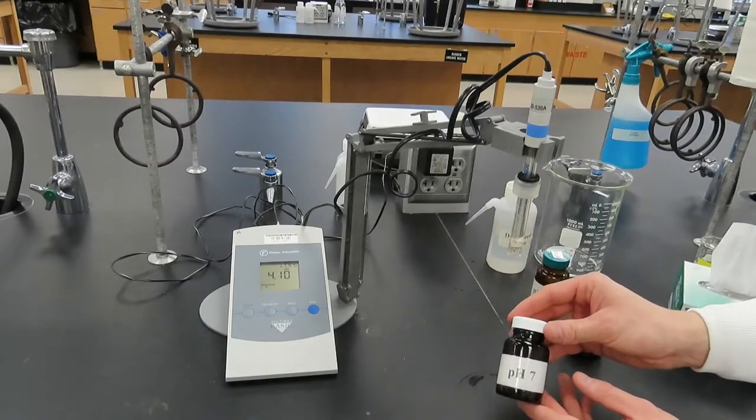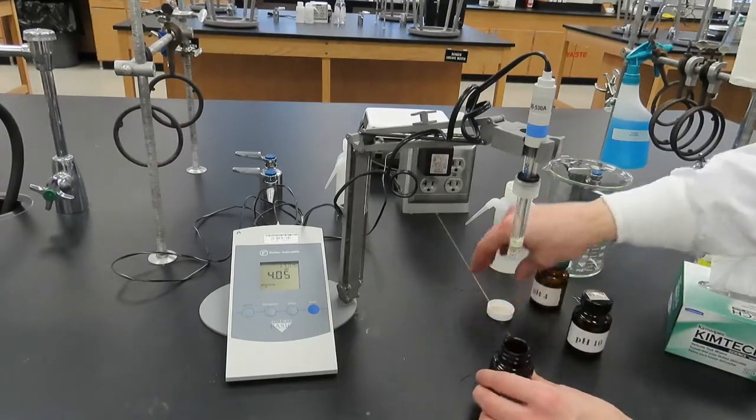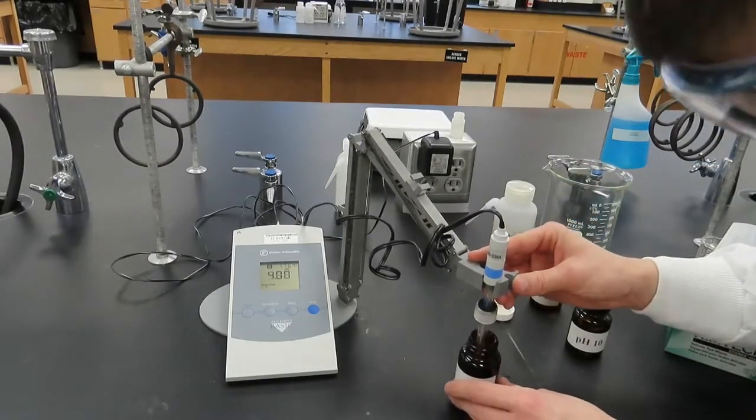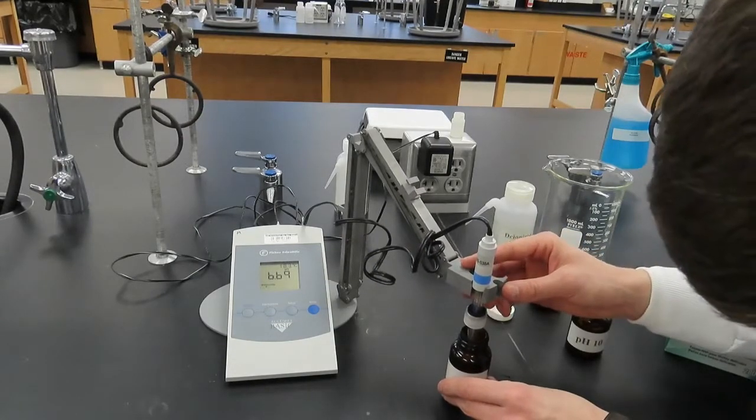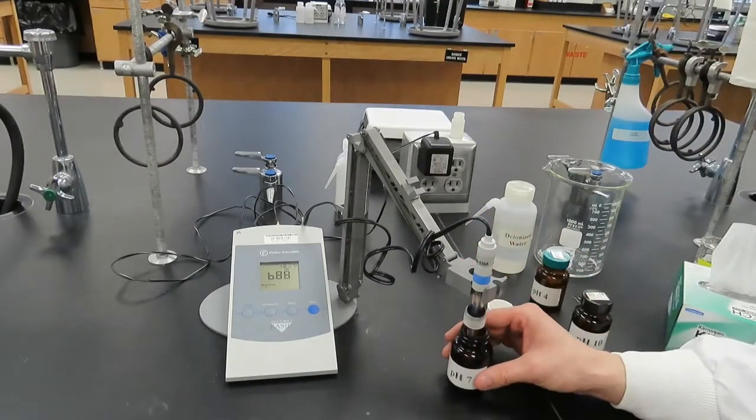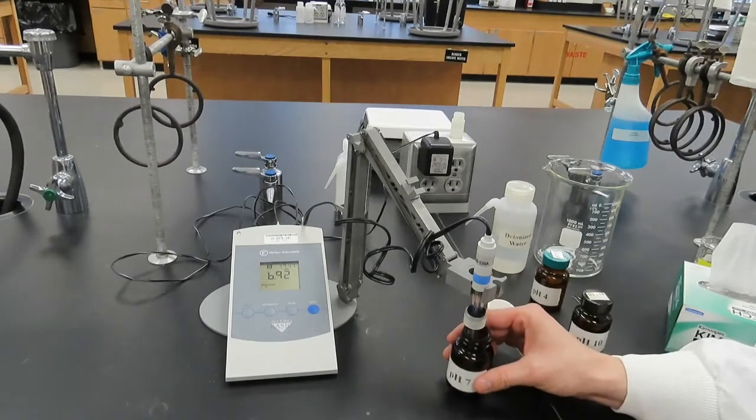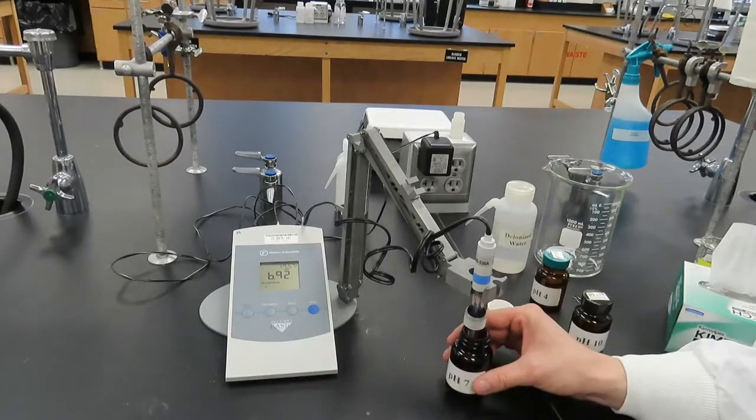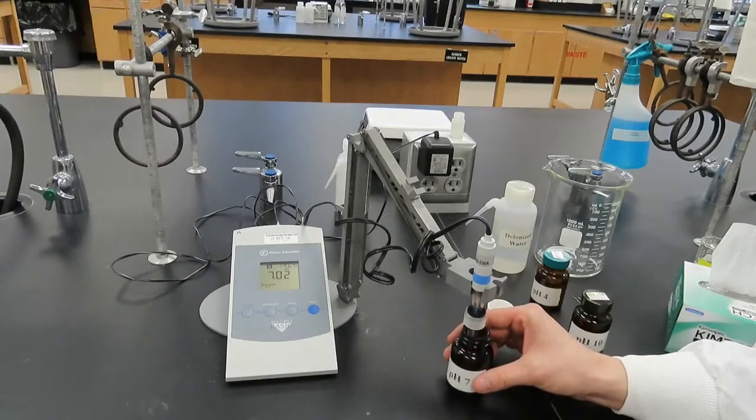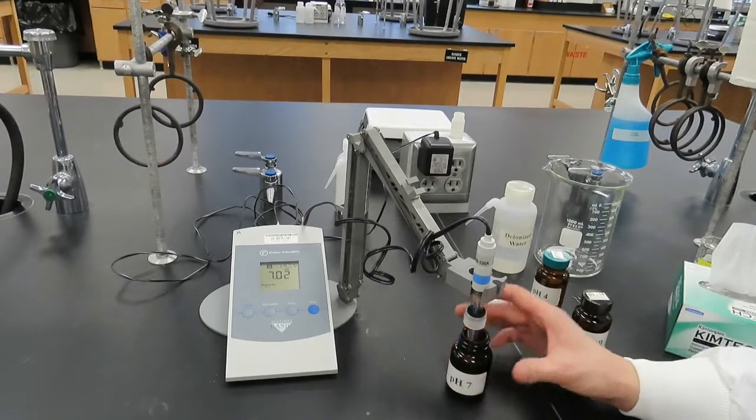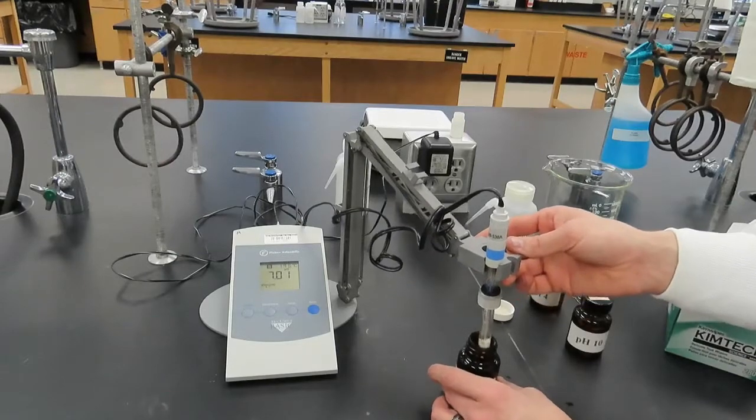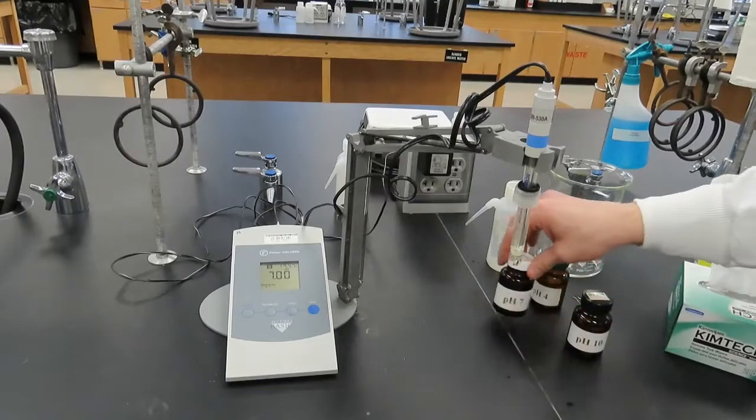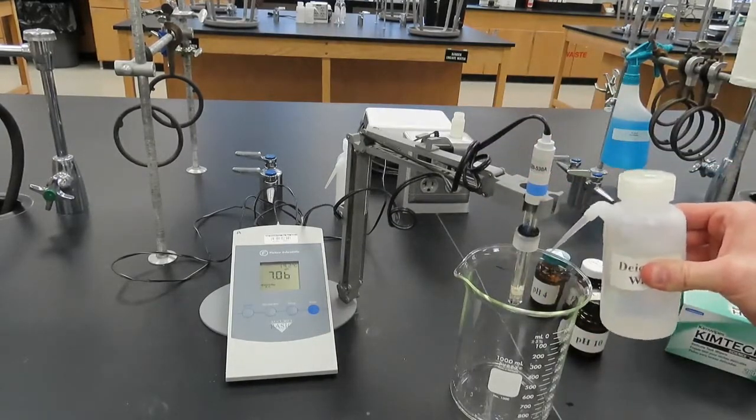Secondly, we will repeat the same process with a buffer solution of pH 7. When the pH value stabilizes, press the Standardize button while continuing to swirl the pH 7 buffer solution. Remove the electrode from the pH 7 buffer solution, rinse, and dry it.